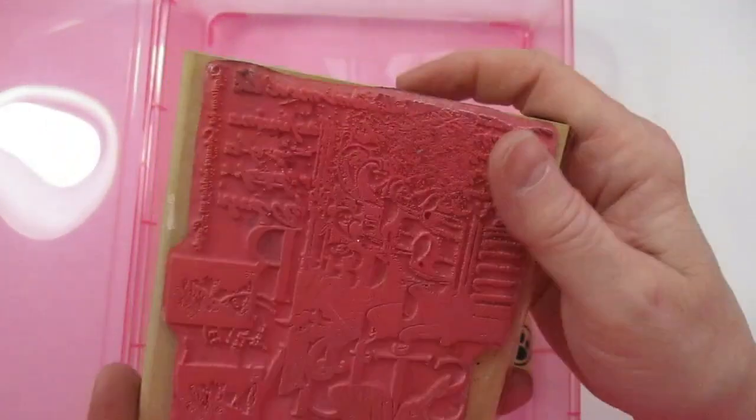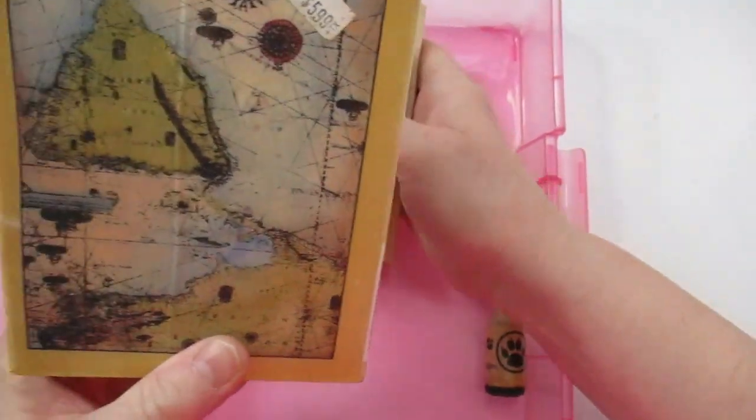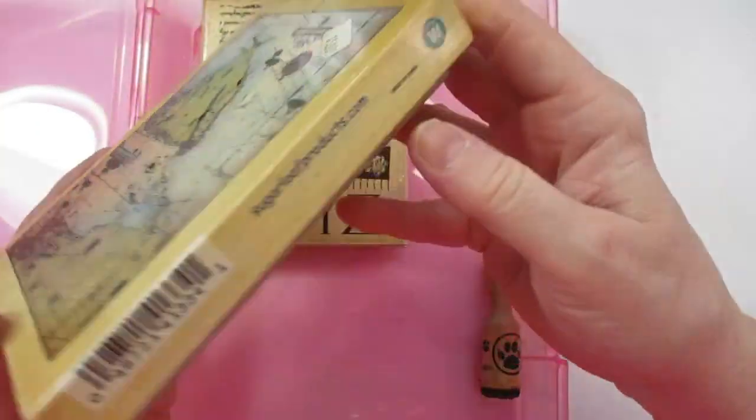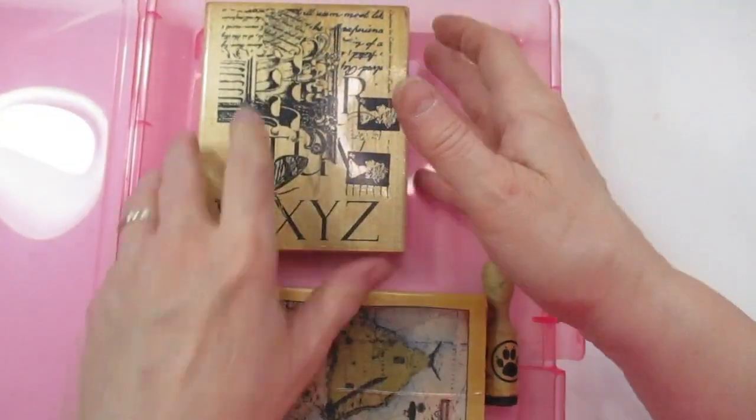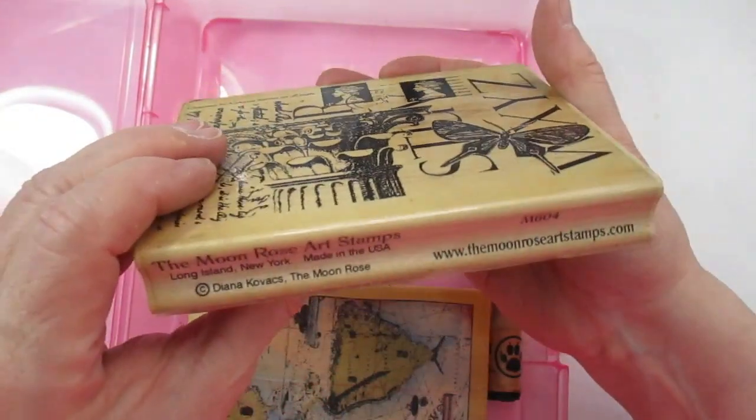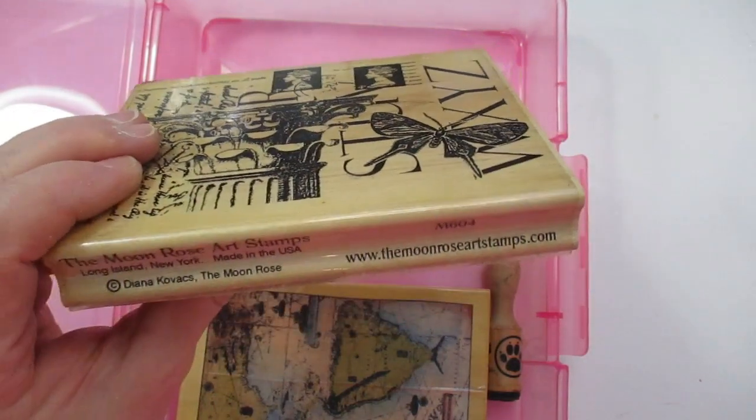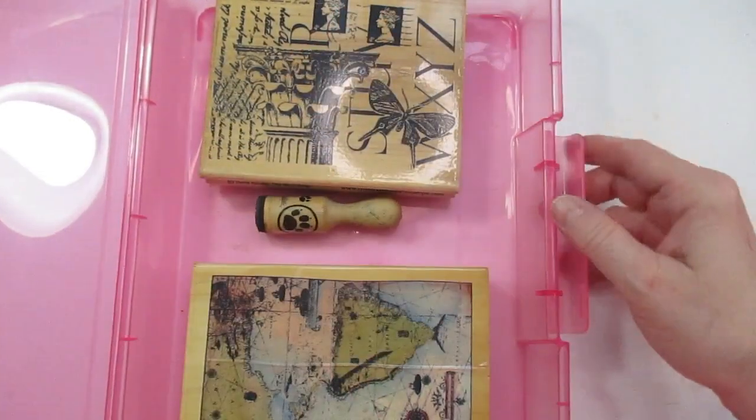I don't usually use the big block stamps anymore, but they were marked like $5.99 when they were new. This is Sugar Loaf Products—I've never heard of them. If you've heard of them, comment down below and let me know. And then there's this one.